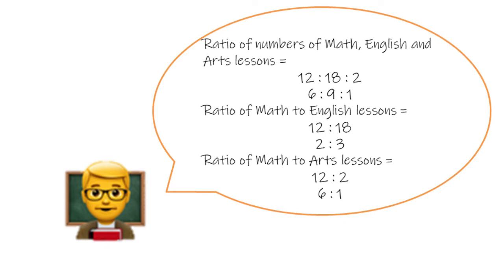We can also extract the ratios of any terms among the given ratio. The ratio of numbers of Maths lessons to English lessons is 12 to 18, that equals 2 to 3. The ratio of numbers of Maths lessons to Arts lessons is 6 to 1.